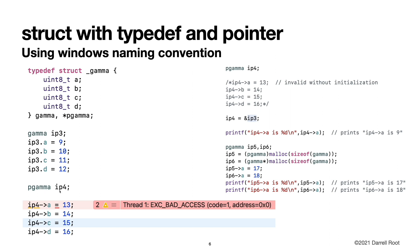And then we can create ip4, which is of type pointer to gamma. However, when we create ip4, because it's a pointer to gamma, we haven't actually created a gamma that it's pointing at. It's not actually pointing at anything at this point. So when we try to assign values to the members of ip4, we get a crash because there's no valid pointer at this point.